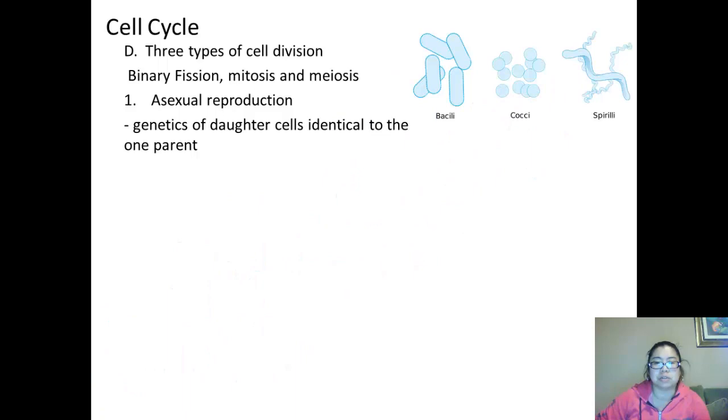In bacteria, there are three types categorized: bacilli, cocci, and spirilli. They go through the process of reproducing cells through binary fission, which has three steps.